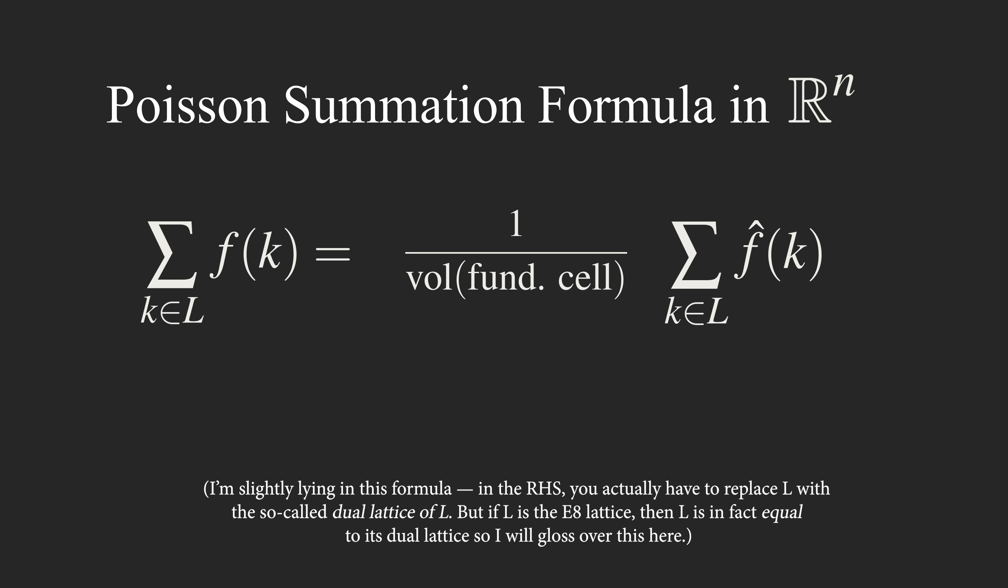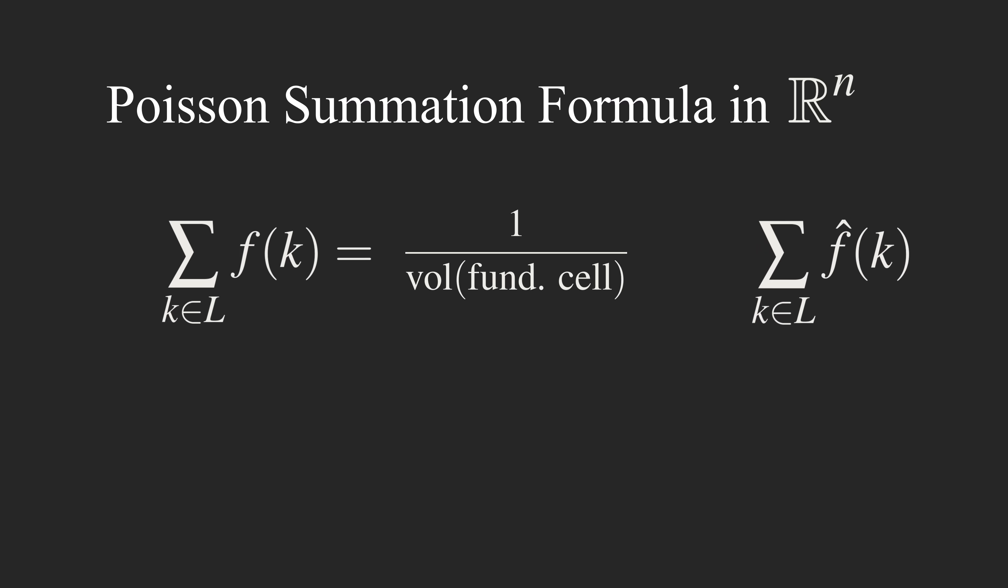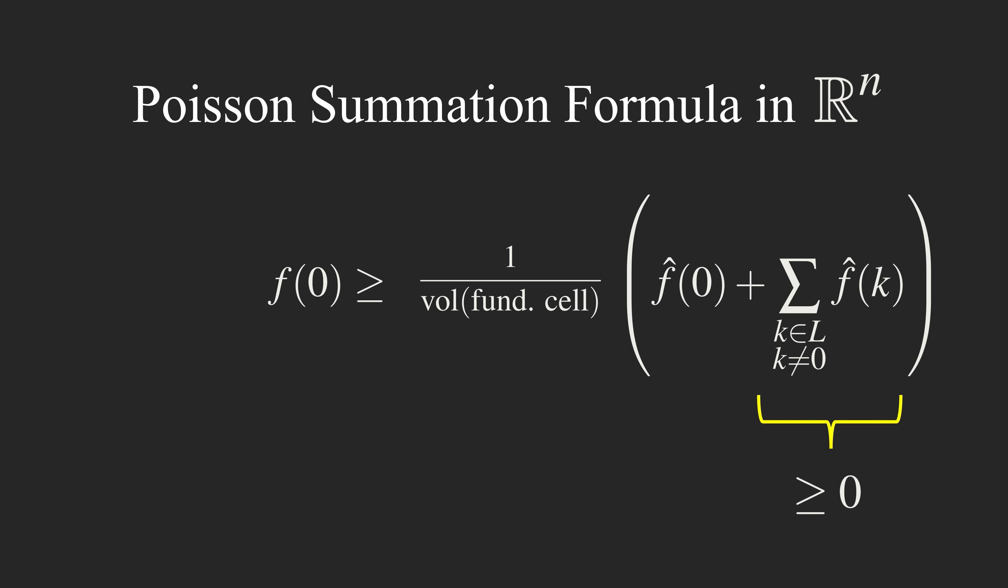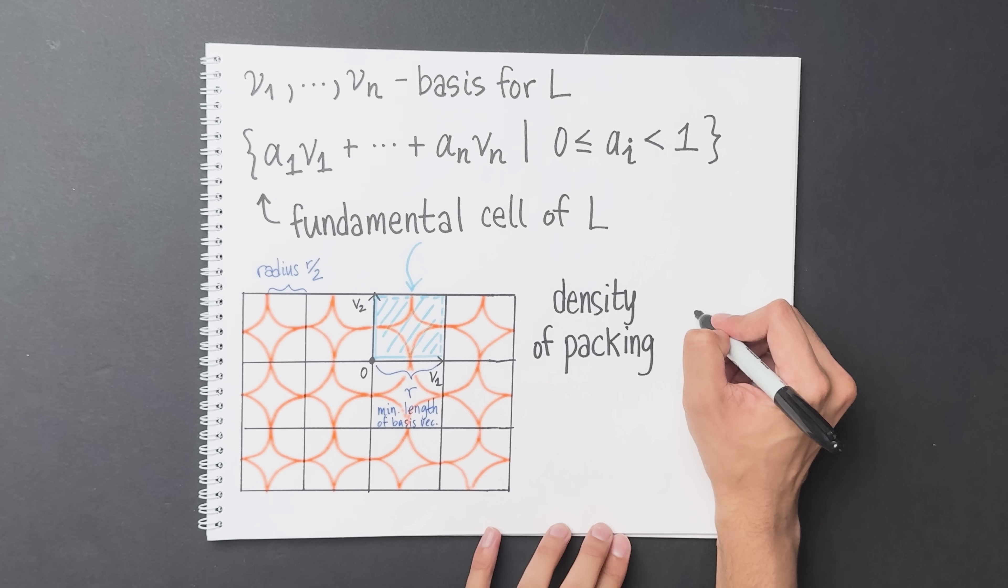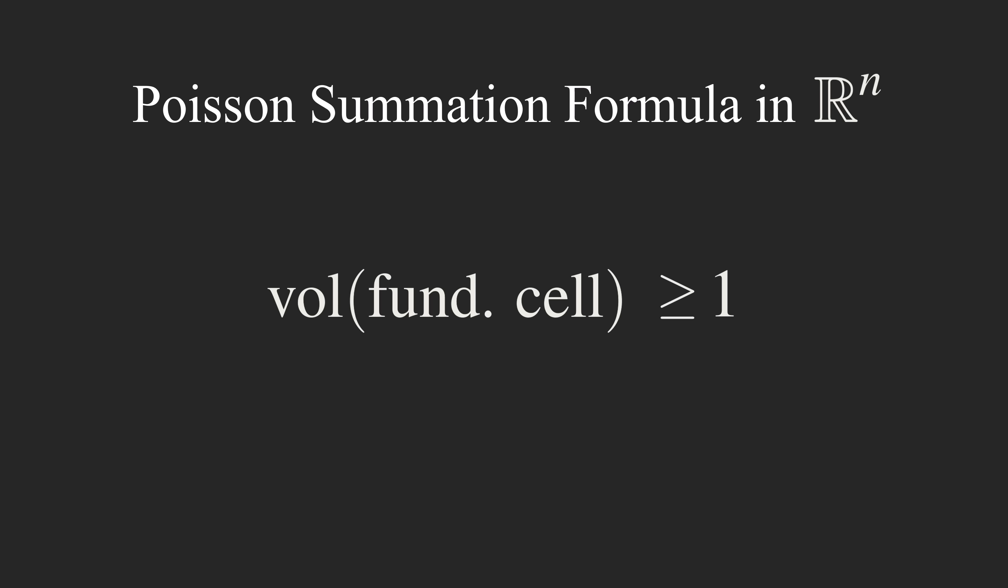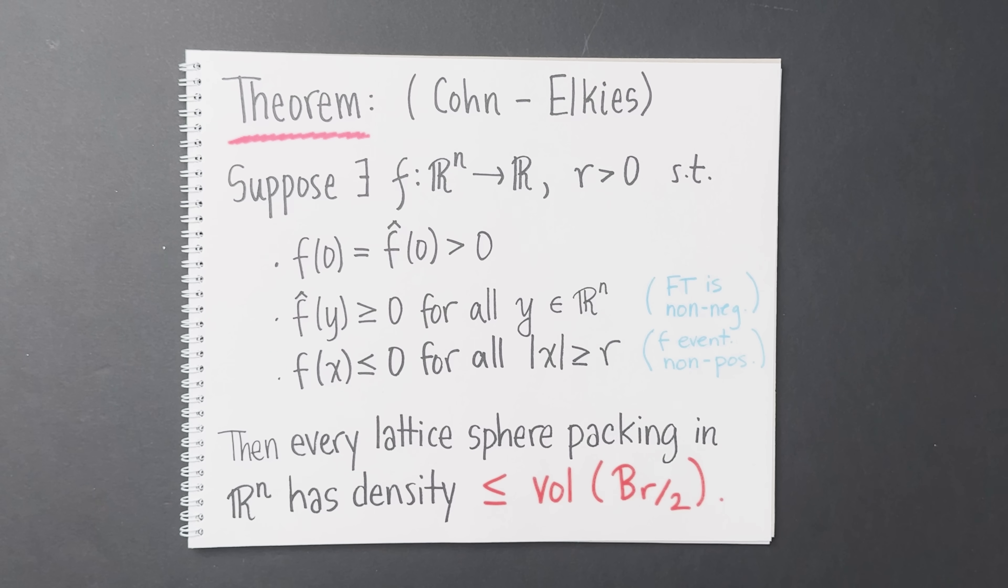Now let's write the left-hand side as f of 0 plus the sum over all the non-zero terms of the lattice. Likewise, let's write the right-hand side as f hat of 0 plus the sum over all the non-zero terms of the lattice. By our assumption, all these terms over here are less than or equal to 0, so we can remove them and replace the equality with an inequality. Again, by our assumption, all these terms over here are greater than or equal to 0, so we can remove them as well. Rearranging the equation and remembering that f of 0 equals f hat of 0, we get that the volume of the fundamental cell is at least 1. But remember that we defined the density of the packing to be the volume of a ball divided by the volume of a fundamental cell. Since the volume of a fundamental cell is at least 1, the density of the packing is at most the volume of the ball.